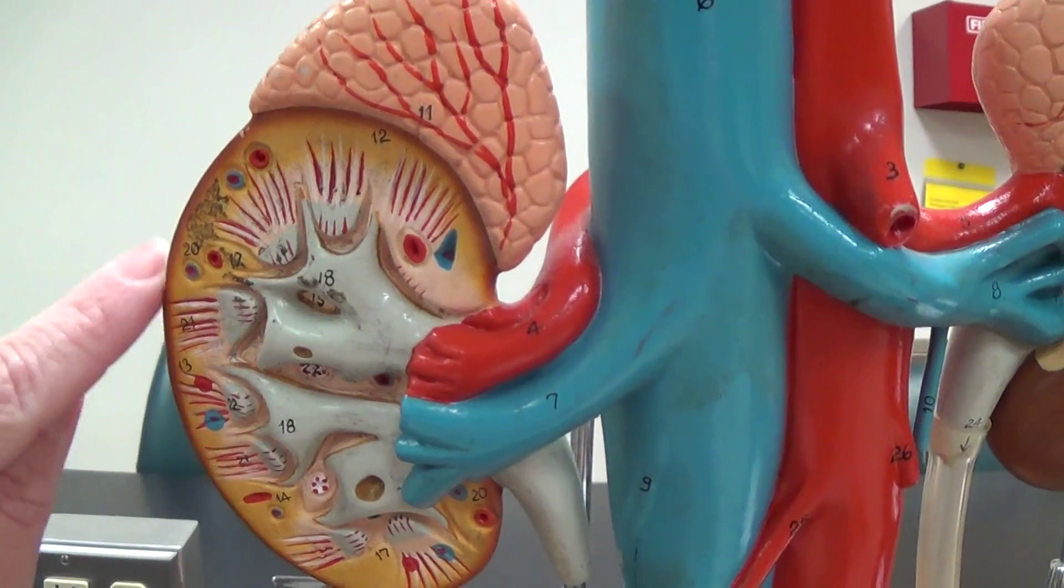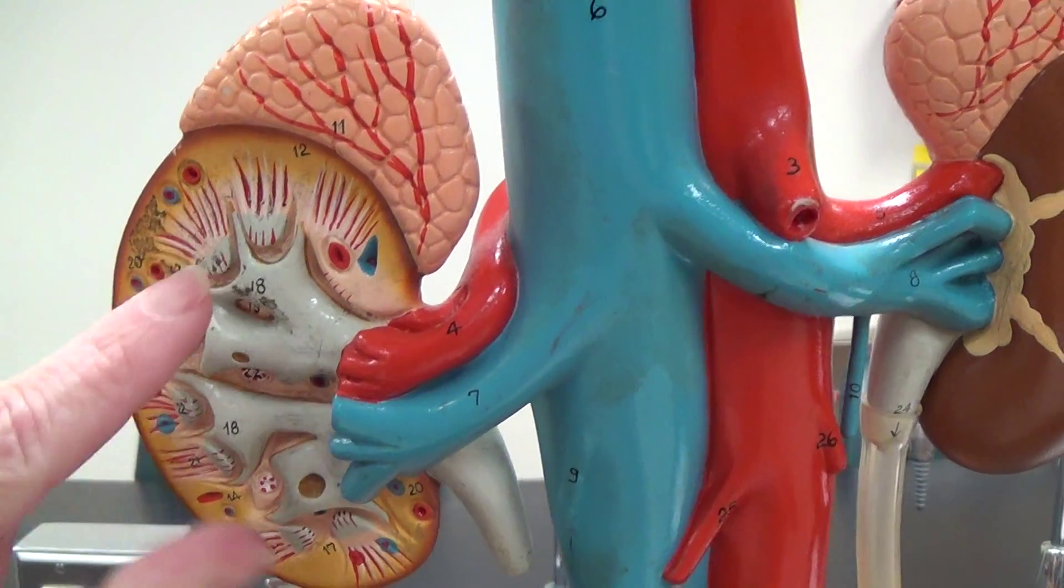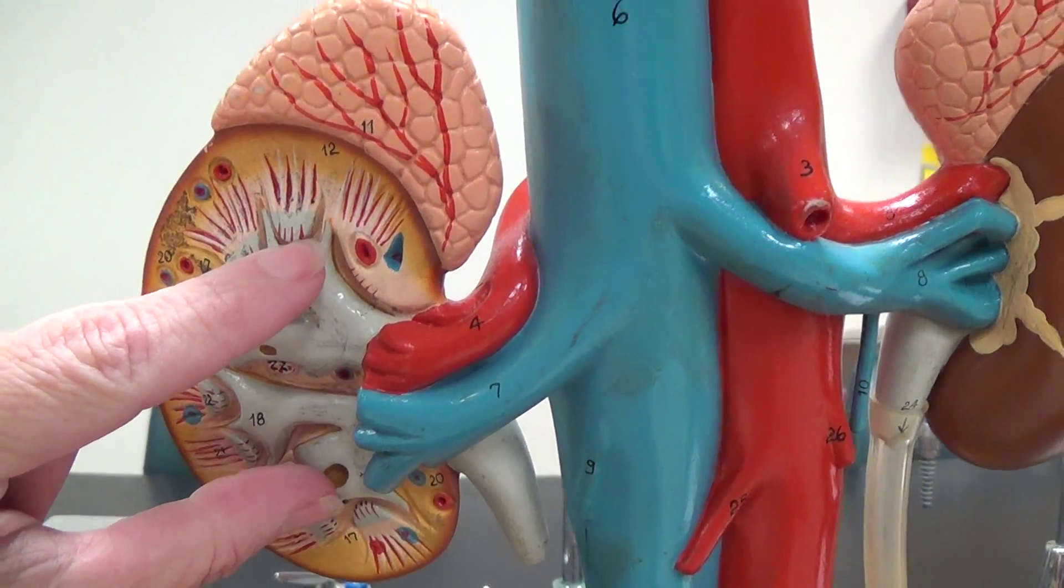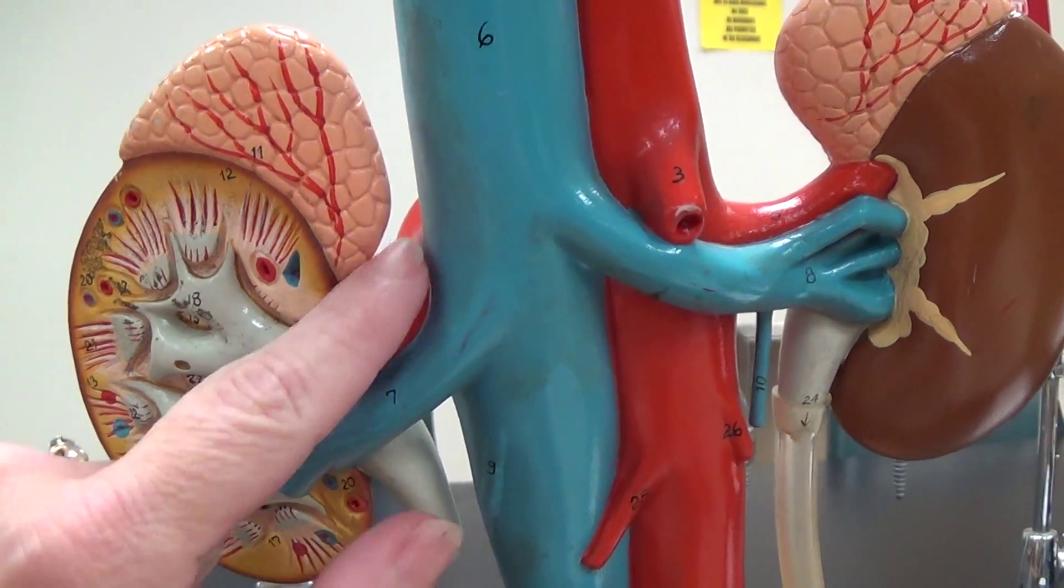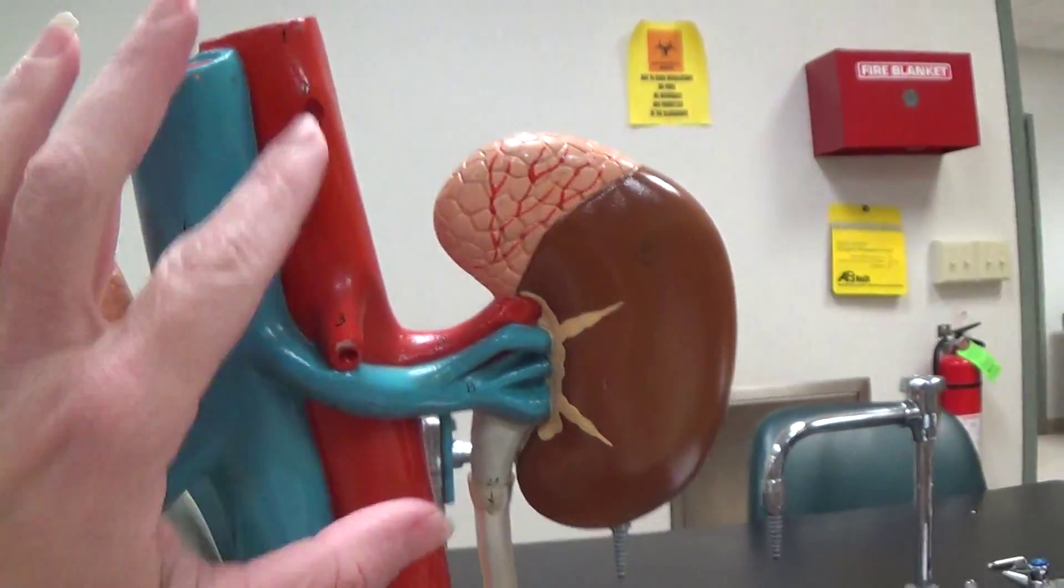In here we can see the pyramids, the renal pelvis, and we can see the renal artery and the renal vein delivering blood and taking blood.